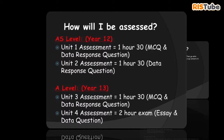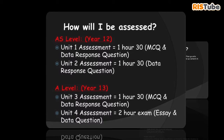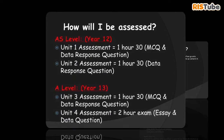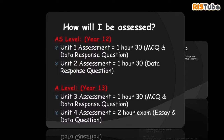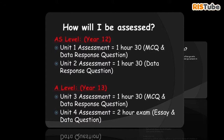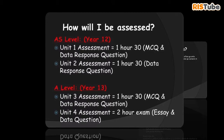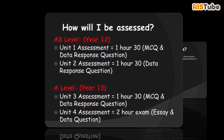A2 Unit 3 – Business Economics and Economic Efficiency. The exam is 1 hour and 30 minutes long, consisting of supported multiple choice questions and one data response question out of two.